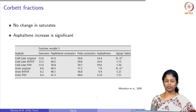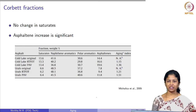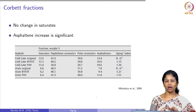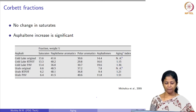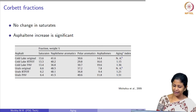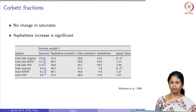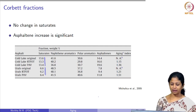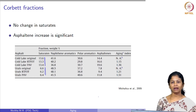Now let us see the effect of aging on the SARA fractions — saturates, naphthene aromatics, polar aromatics, and asphaltenes. For both types of bitumen, there is no change in the saturates fraction. These saturates are linear long-chain aliphatic compounds that do not absorb any oxygen-containing molecules.